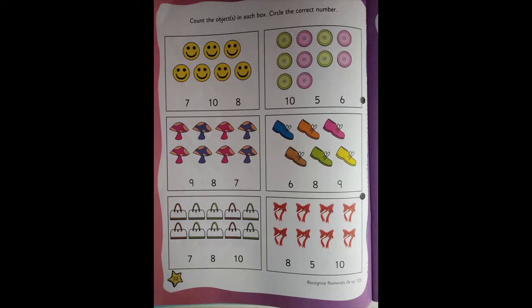Children, the next home fun activity is in Little Thinker Mathematics. You are going to open page number 22. You are going to count the objects in each box and circle the correct number. This page also, children, you are going to do without your mama or daddy's support. You are going to do on your own.